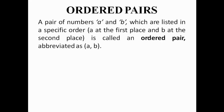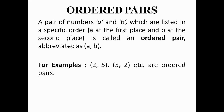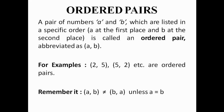Now, to explain about coordinate geometry, I shall start from ordered pairs. What is an ordered pair? Pairs means two numbers — a pair of numbers A and B, which are listed in a specific order, A at the first place and B at the second place. This is called an ordered pair and it is written as (A, B). For example, (2,5), (5,2), (3,4), etc. are ordered pairs. But students, remember: (A, B) is not equal to (B, A), unless A equals B.